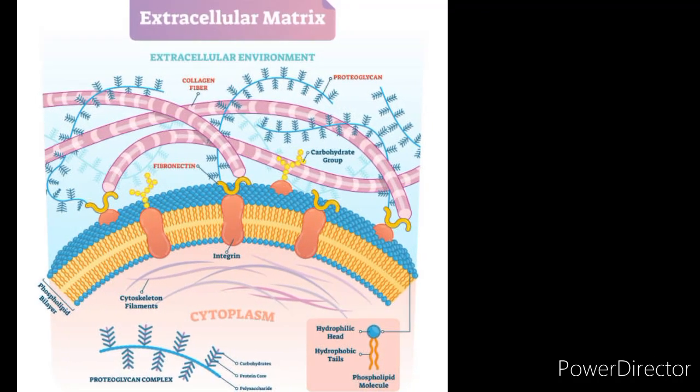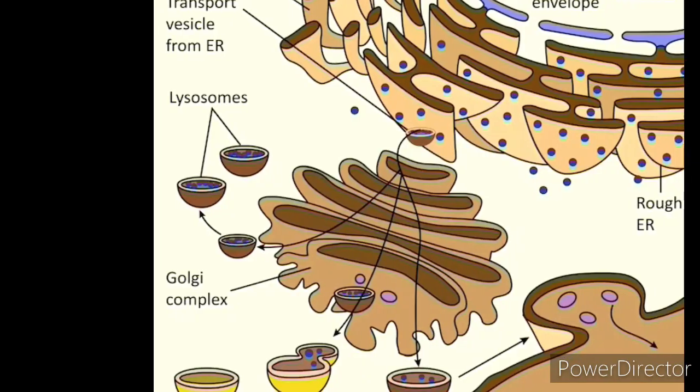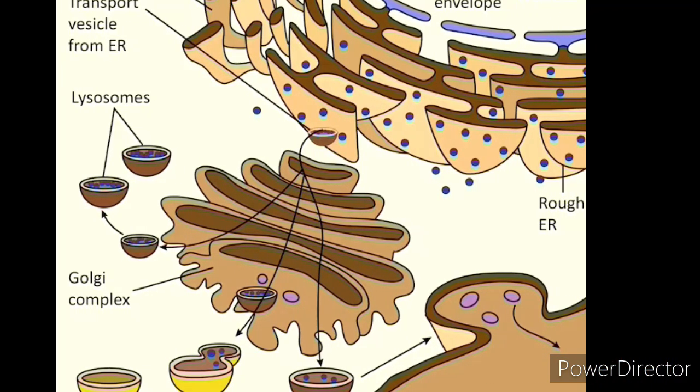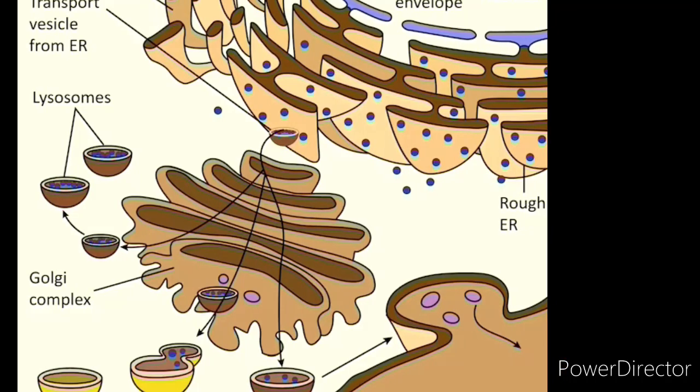Cytoplasmic inclusions. These are non-living, temporary structures, like storage granules or pigment molecules, which may be found in certain cell types.